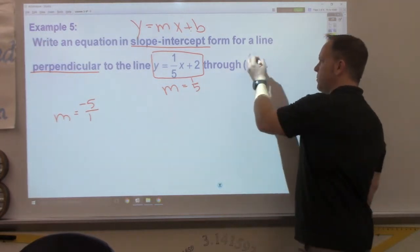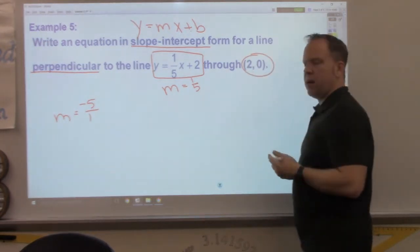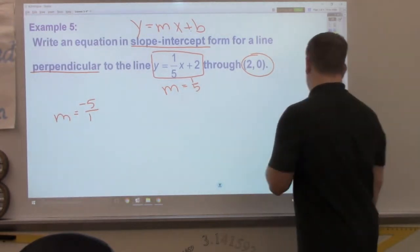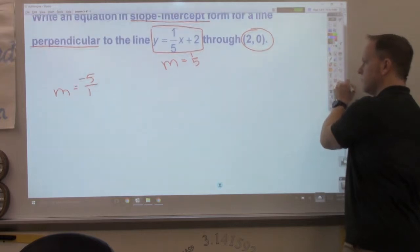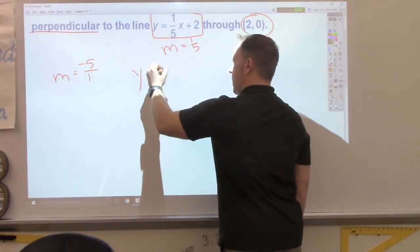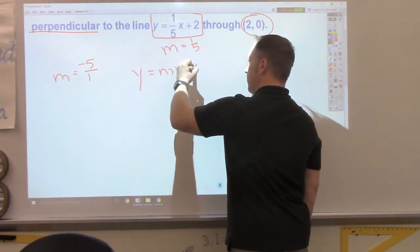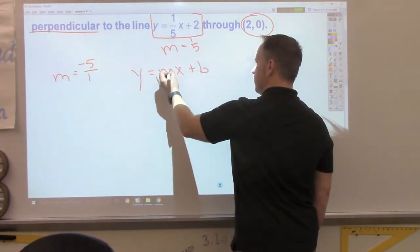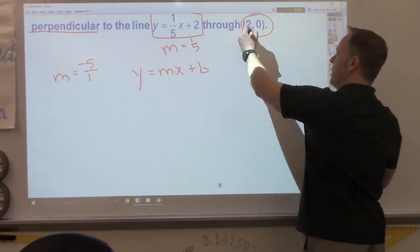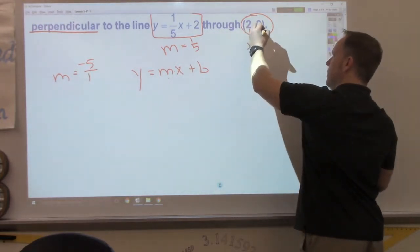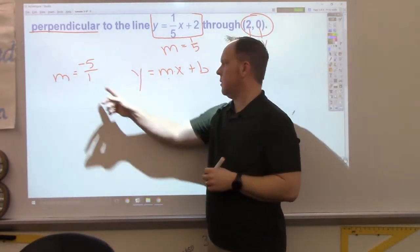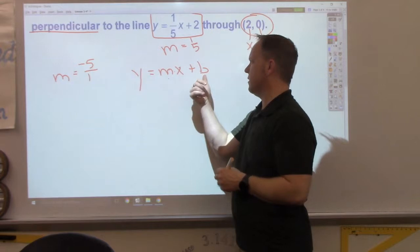But it has to go through this point. So, now, again, I don't know my y-intercept. So, I have to figure that part out. Again, I love using this formula because it does everything I need right now. If I'm going through this point, here's my x, here's my y. I know my y. So, I know y. I know m. I know x. I can solve for b.